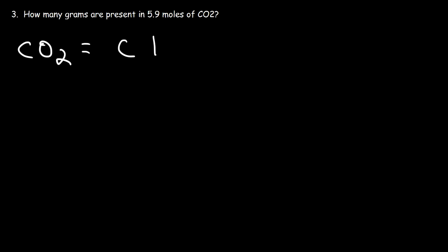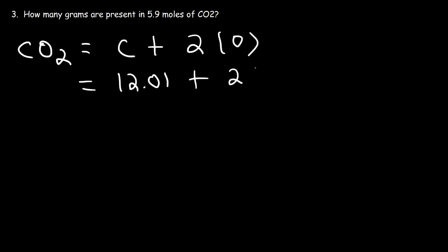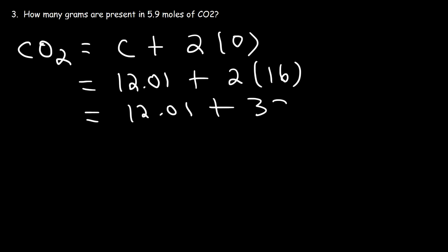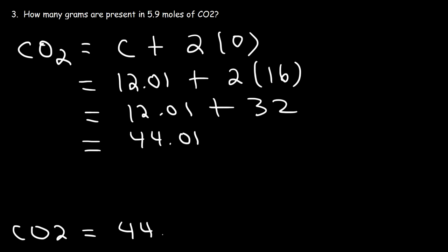We have 1 carbon atom and 2 oxygen atoms. The atomic mass of carbon is 12.01 and the atomic mass of oxygen is 16. We need to calculate the total molecular mass of CO₂. 2 times 16 is 32; if we add that to 12.01, this gives us 44.01. So that is the molar mass of CO₂ — 44.01 grams per mole.